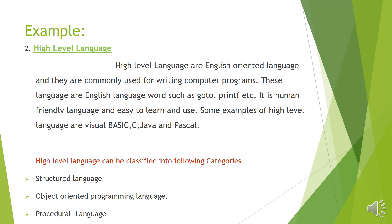Some different types of high level languages are C, C++, Java, Pascal, and BASIC. We will briefly explain these high level languages in the next tutorial. Other categories of high level language consist of structured language, object oriented programming language, and procedural language.